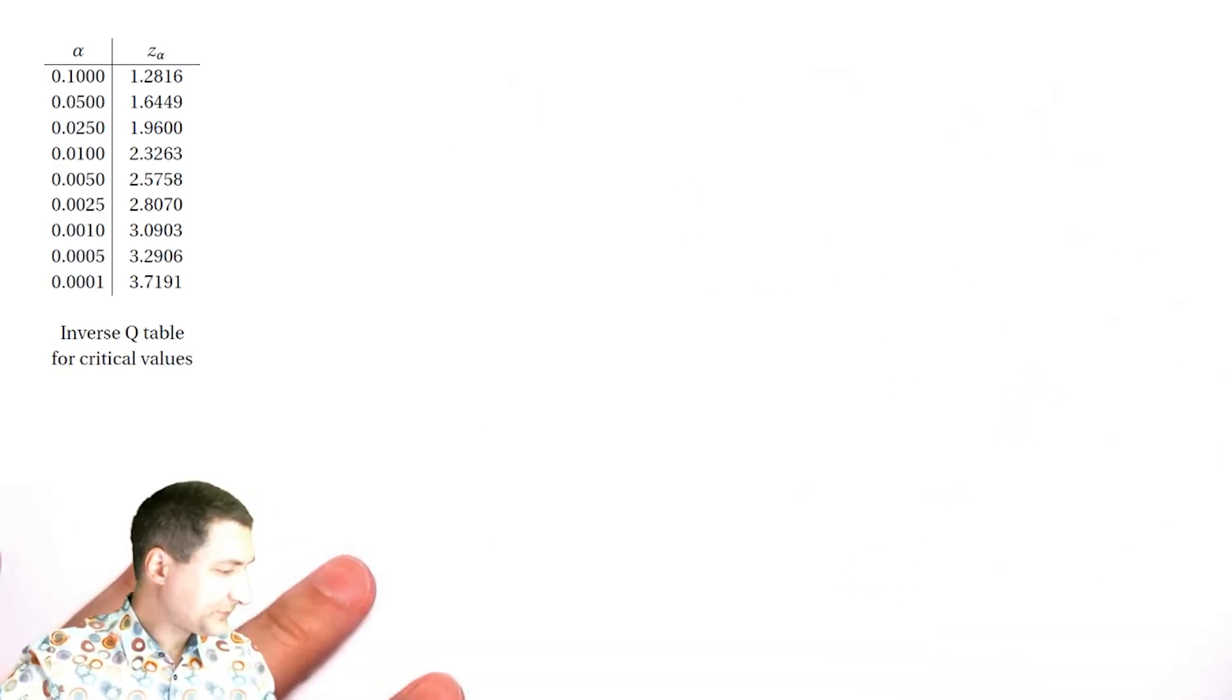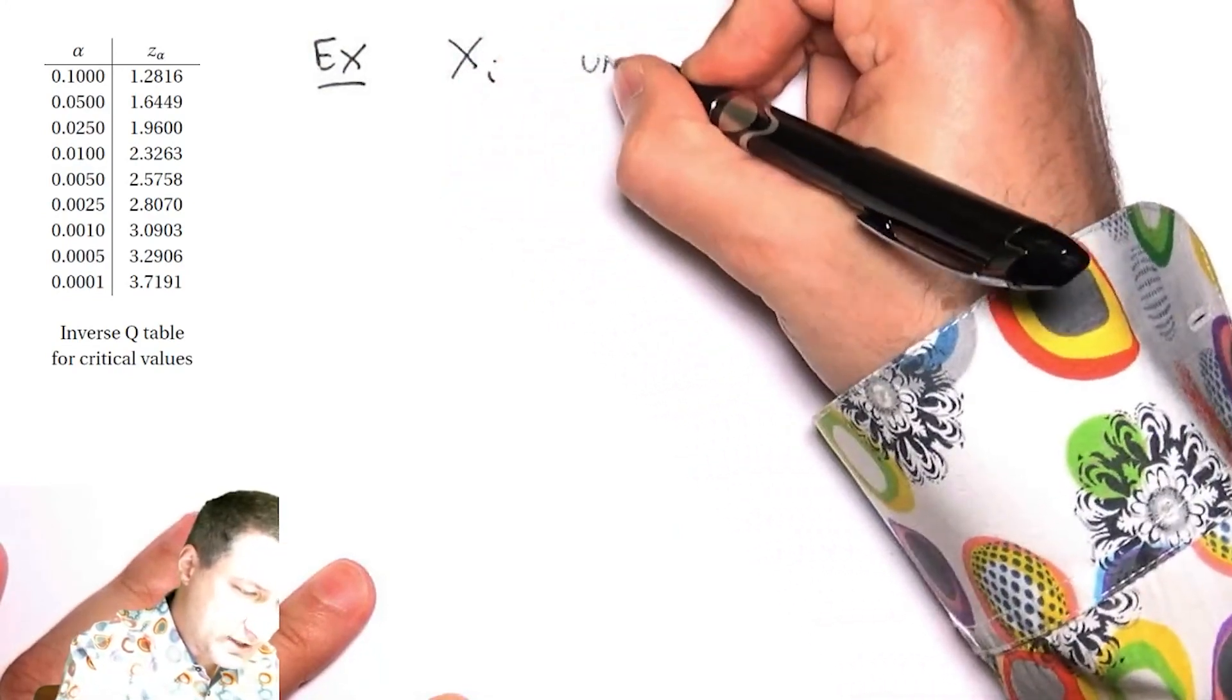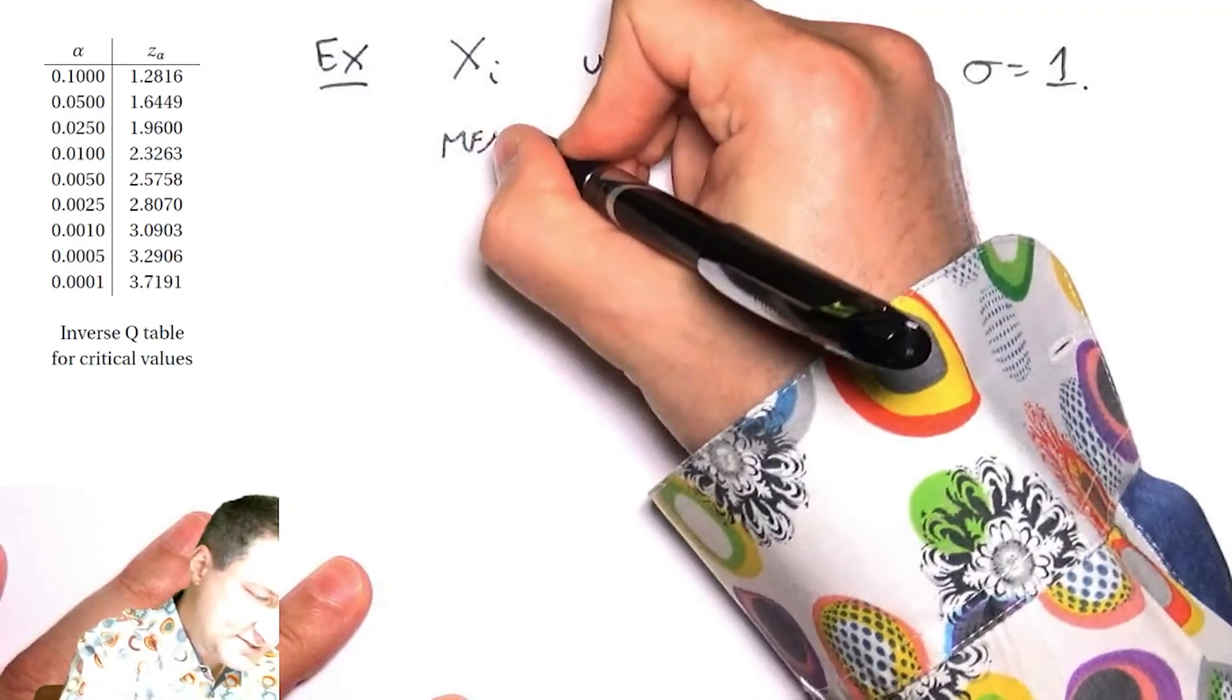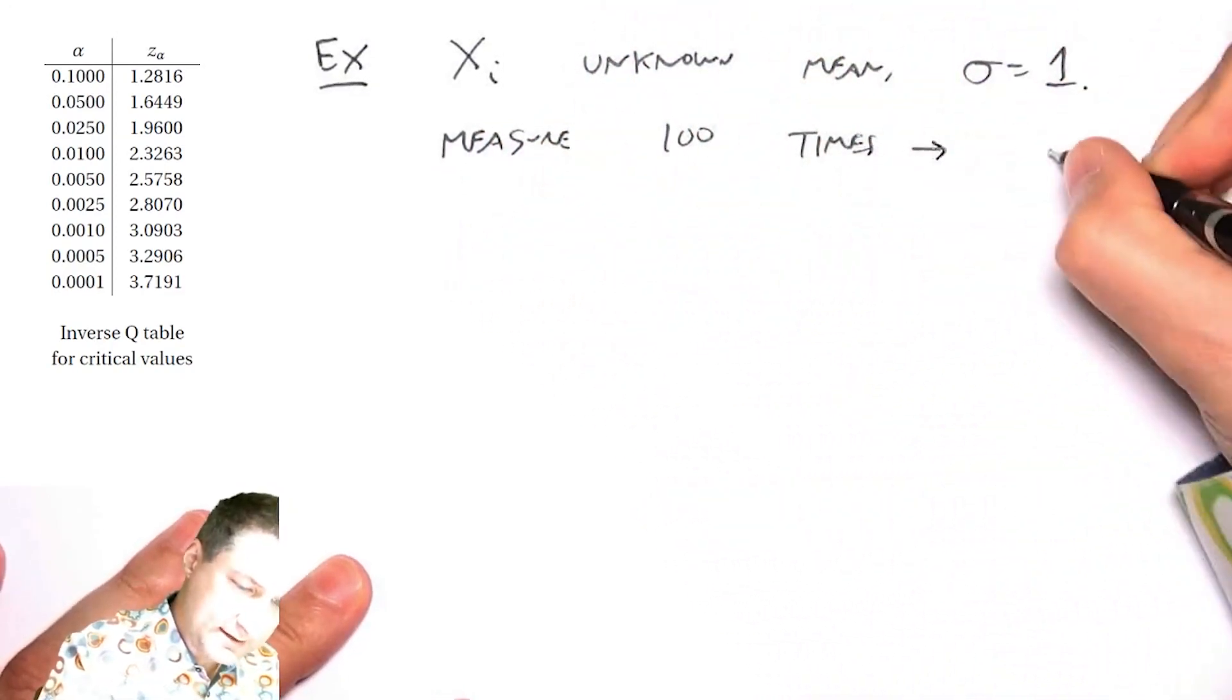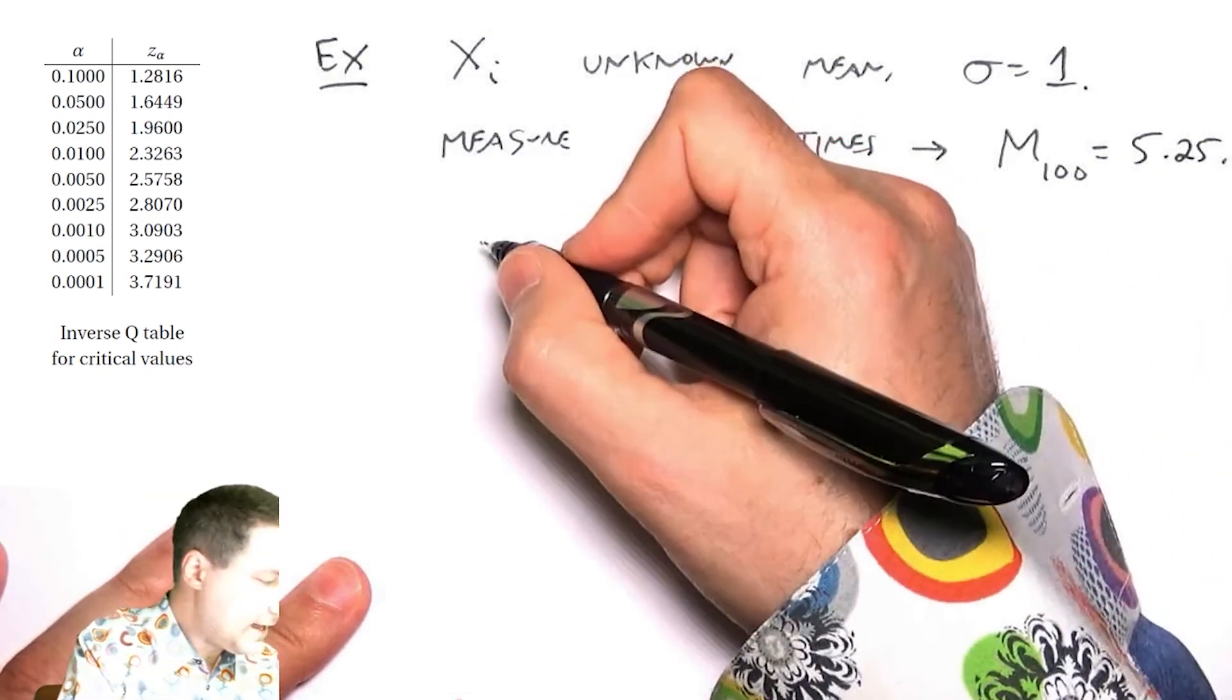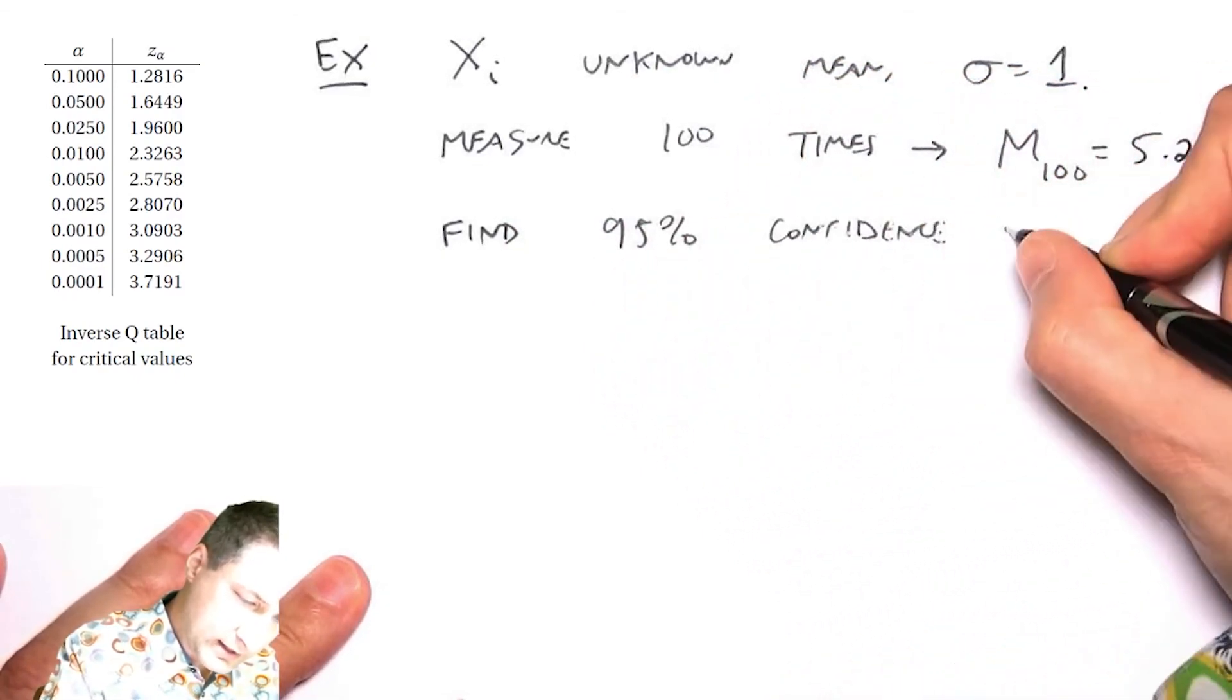Here's the example: suppose Xᵢ has unknown mean and variance equal to 1. I measure x 100 times to obtain this empirical measurement that the mean of those numbers was 5.25. Now I want to find the 95% confidence interval on μ.